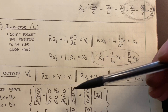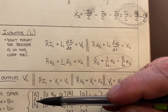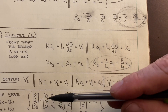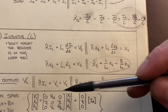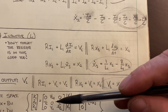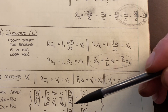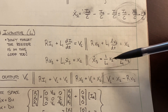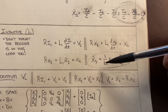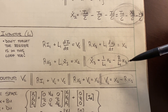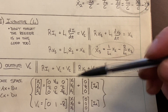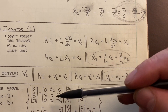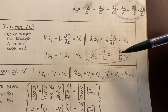In the second row of the A matrix for X2-dot: X1 is multiplied by negative 1/C, there is no X2 component, and X3 is multiplied by negative 1/C. So the second row is: -1/C, 0, -1/C. For X3-dot, the third equation: there is no X1 component, X2 is multiplied by 1/L1, and X3 is multiplied by negative R/L1. So the third row is: 0, 1/L1, -R/L1.